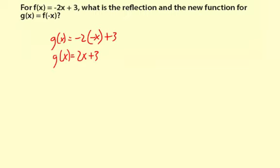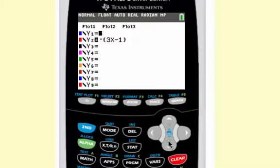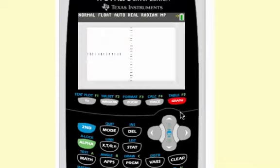And what is the reflection? So let's graph on the calculator and compare. Okay, so first I'll graph the original function, which is y equals negative 2x plus 3. And then the reflected function is 2x plus 3, or g of x. Let's graph and compare.